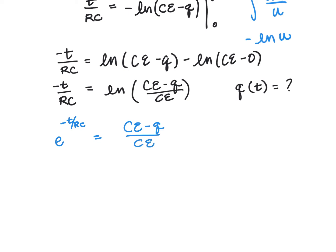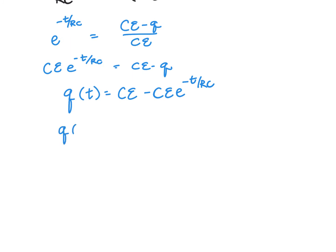We can further solve by multiplying both sides by capacitance times EMF. We'll have capacitance times EMF e to the negative T over RC is equal to the capacitance times EMF minus Q. So then Q of T would be equal to capacitance times EMF minus capacitance times EMF e to the negative T over RC. So I could pull out the C EMF and have 1 minus e to the negative T over RC.